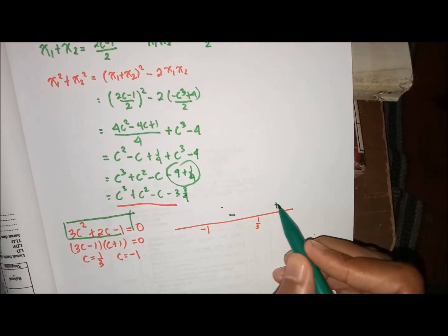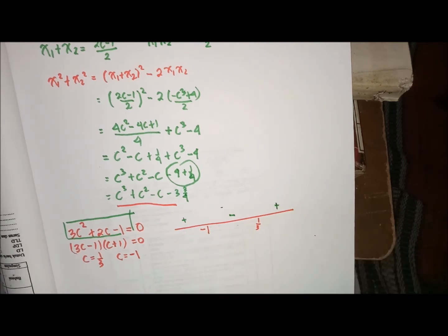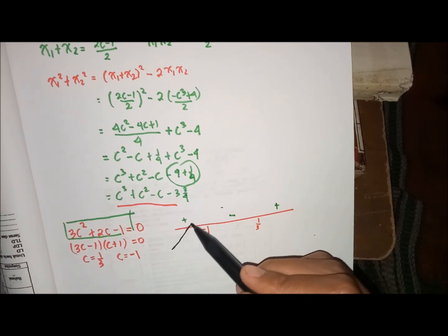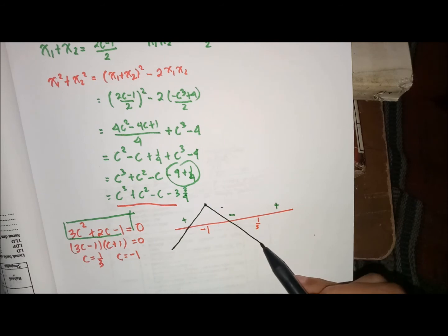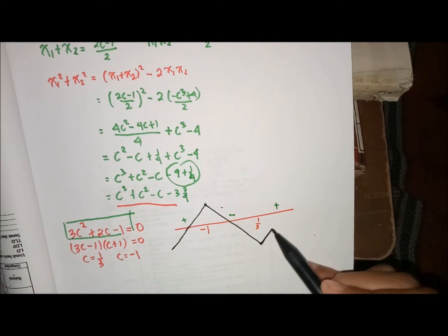Berarti di sini plus, plus. Sehingga fungsinya ini naik sampai min 1, terus turun sampai 1 per 3, terus naik lagi.